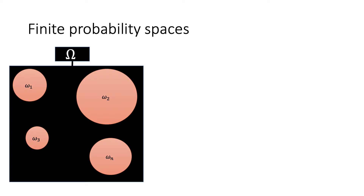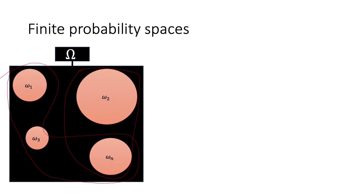An event is simply a subset of omega — a subset of the things inside the universe. For example, this group here would be one event, and this other group would be another event. That's what an event is.